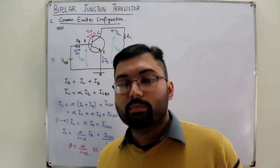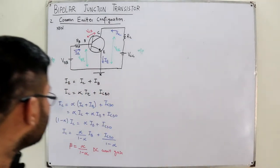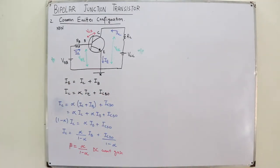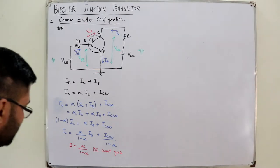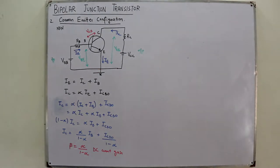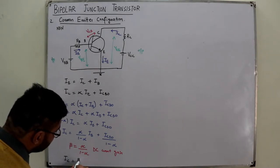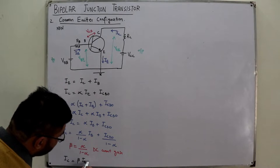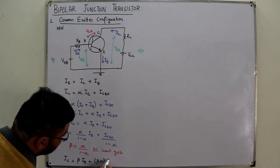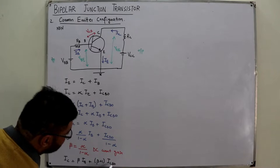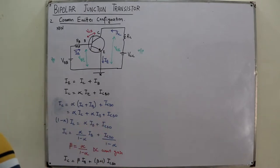Alpha was the DC current gain for the common base configuration; here we have β for common emitter. So IC = β·IB + (β+1)·ICBO. The term (β+1)·ICBO comes from dividing ICBO by (1−α), which equals (β+1)·ICBO.